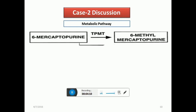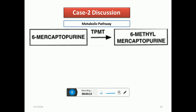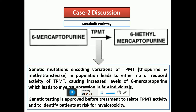The second example involves 6-mercaptopurine being converted to 6-methyl mercaptopurine via the enzyme TPMT — thiopurine S-methyltransferase. Genetic mutations and coding variations in TPMT can increase or decrease its activity. In case number two, TPMT activity was decreased, so levels of 6-mercaptopurine increased, giving rise to excessive myelosuppression. Genetic testing for TPMT is now mandatory before starting any patient on 6-mercaptopurine.